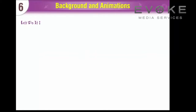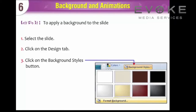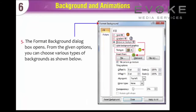Let's do it. To apply a background to the slide, select the slide, click on the Design tab, click on the Background Styles button, select the Format Background option. The Format Background dialog box opens. From the given options, you can choose various types of backgrounds as shown below.